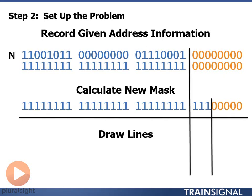So what I'm going to do then is draw some lines. What I want to do is draw two lines. The first line I want to draw is between the given network portion, the first 24 bits, and my given host portion. So I draw a line between the 24th and 25th bit here.